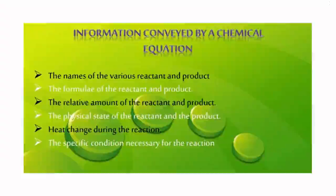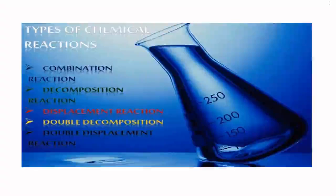Information conveyed by a chemical equation: the names of the various reactants and products, the formulas of reactants and products, the relative amount of the reactants and the products, the physical state of the reactants and the products, heat change during the reaction, and the specific conditions necessary for the reaction.